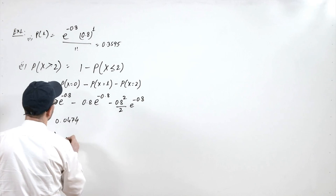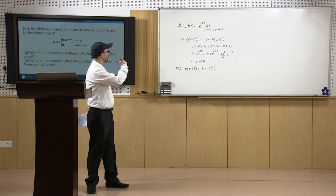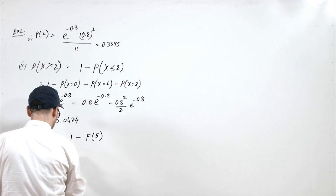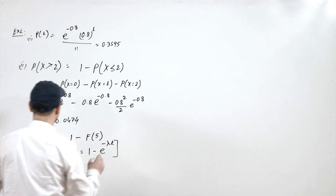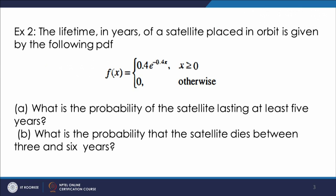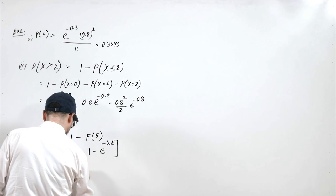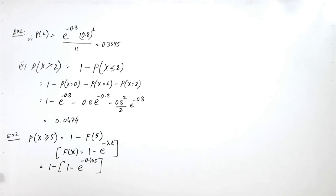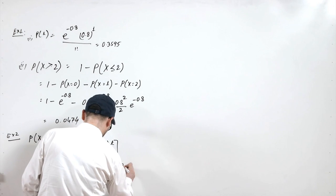The probability of lasting at least 5 years means P(X ≥ 5), which is 1 minus F(5). As we know F(x) = 1 − e^(−λt), with λ = 0.4 given in the expression. So this value will be 1 minus [1 − e^(−0.4×5)], which equals e^(−2) = 0.1353.